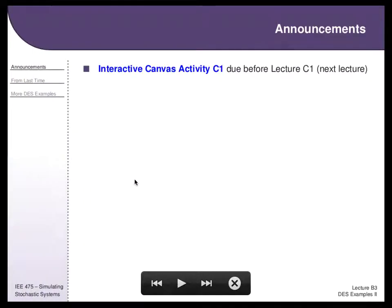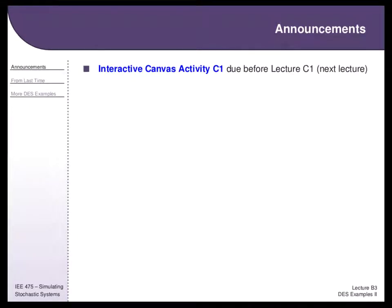There's an interactive Canvas activity due before lecture C1. So this is B3, so C1 is next lecture. There are a bunch of those you can drop, so if you're not interested, that's fine. But it's practice on stuff we've done so far, and it helps you go over what's coming up in Unit C.